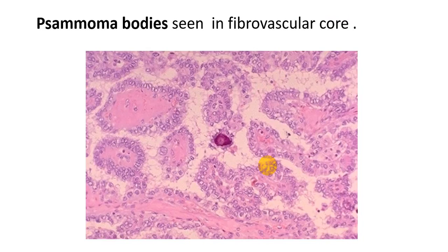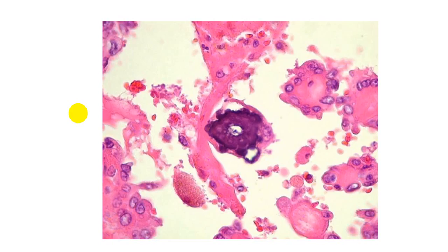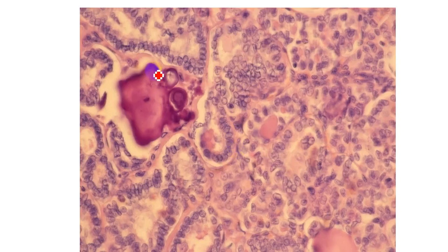The next important microscopic feature is the psammoma body. Psammoma bodies are seen in the fibrovascular core of the tumor. Psammoma bodies are basophilic on H&E staining and are due to dystrophic calcification in necrotic tissue.